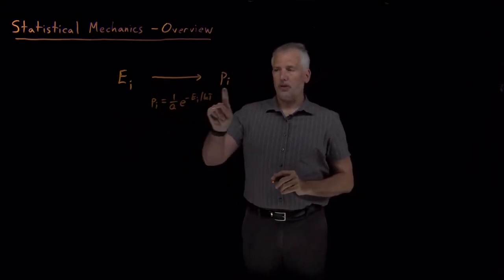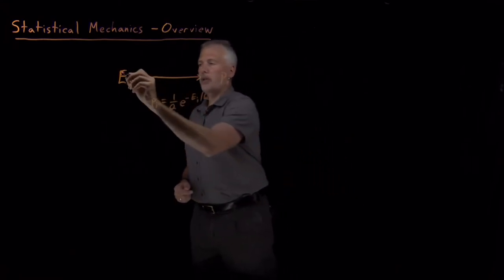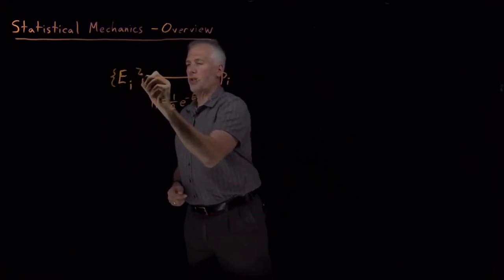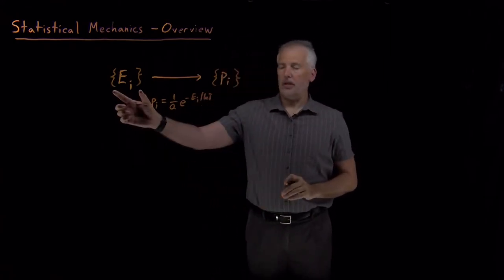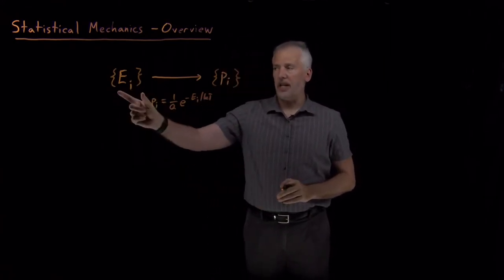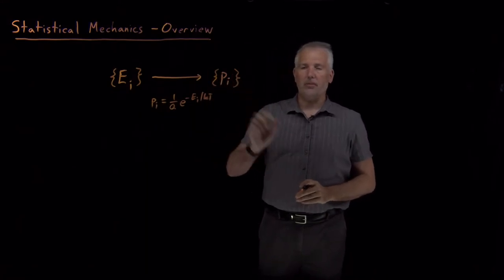If we want to know the actual probabilities, we need to know not just one energy, we need to know all the energies, and that will give us all of the probabilities. If I know the set of all the energies, I can calculate the complete set of all these probabilities.